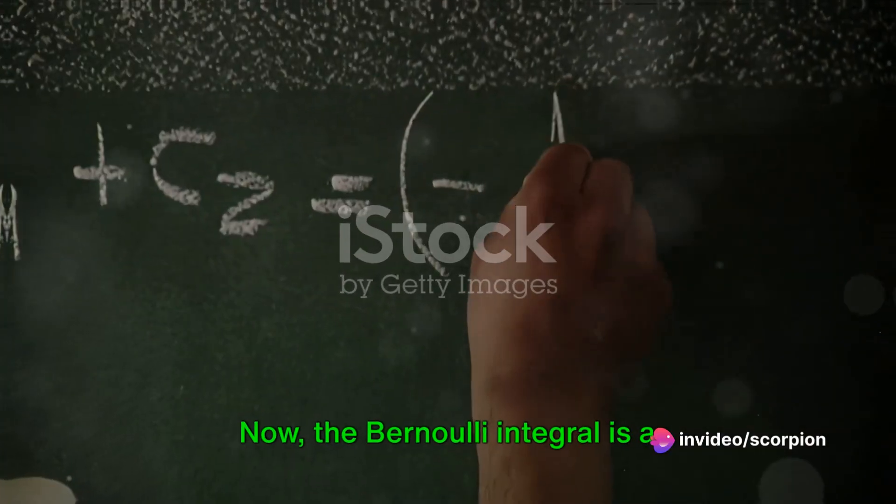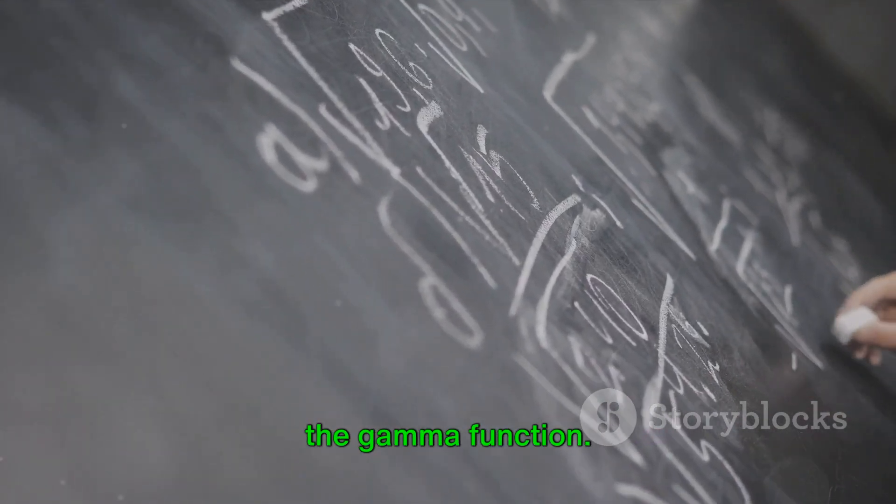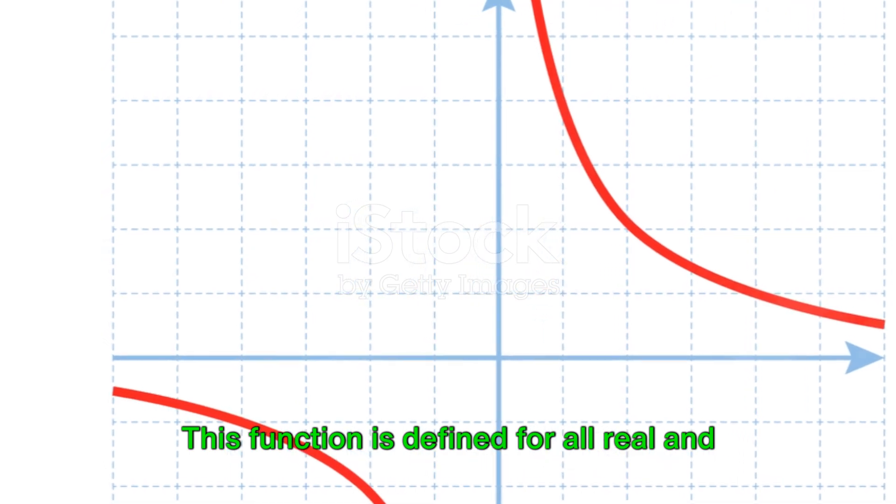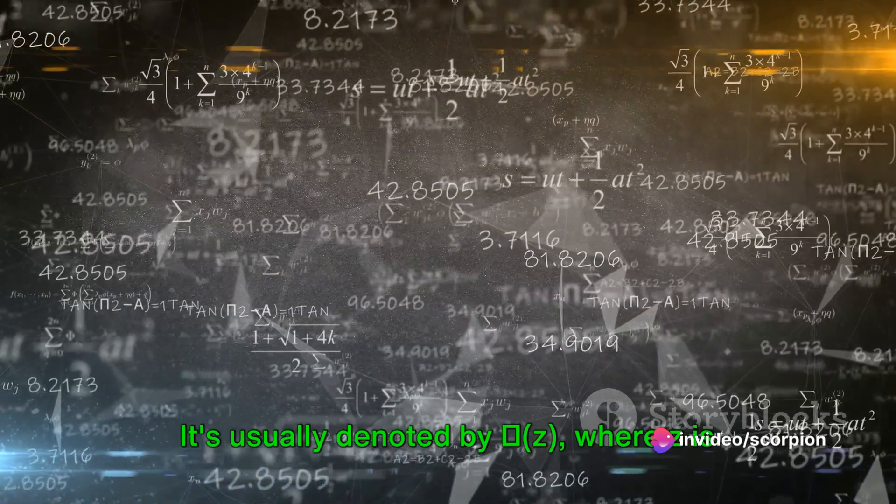Now, the Bernoulli integral is a particular instance of something known as the gamma function. This function is defined for all real and complex numbers, barring negative integers and zero. It's usually denoted by g(z), where z is the argument of the function.